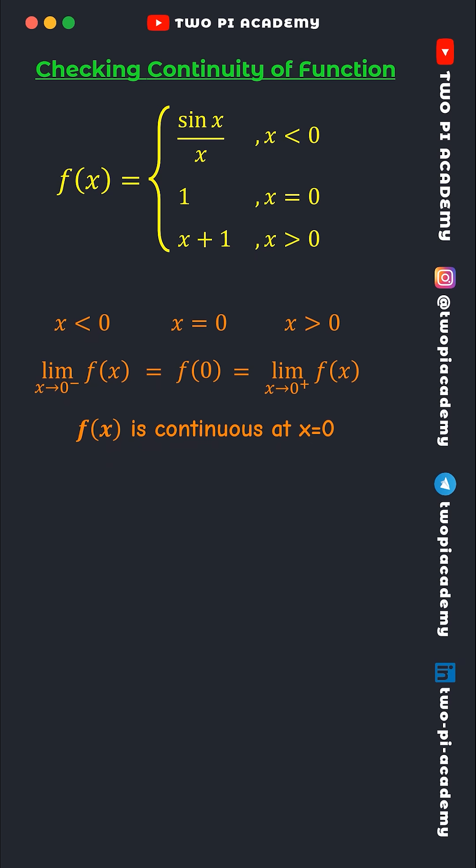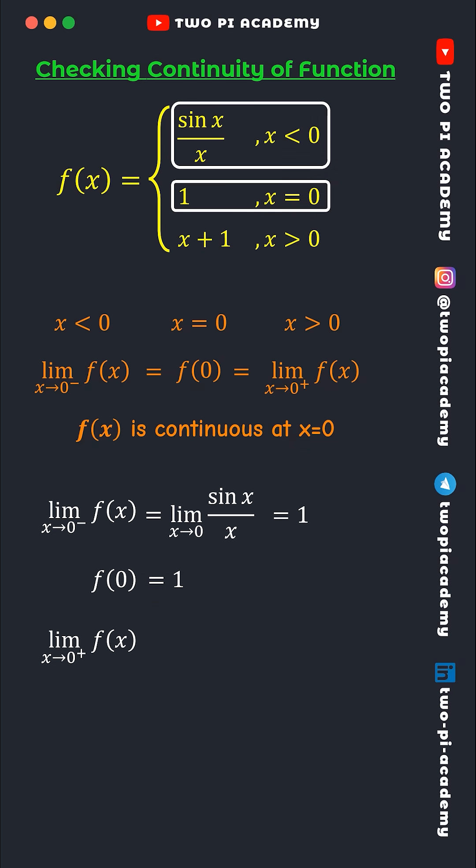In our example, for the left-hand limit, you'll take f(x) as sin x over x, and the limit as x tends to 0 of sin x over x is 1. For f(0), you'll take the value at x equals 0, which is 1. Finally, for the right-hand limit, you'll take f(x) as x plus 1, which gives 1.